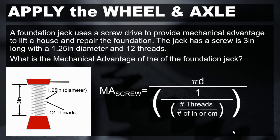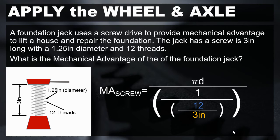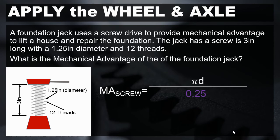To begin, we start with the 3 inch length of the screw, which goes into the denominator in the bottom fraction. We also know that there are 12 threads, which can be substituted in as well. 12 divided by 3 gives us 4, so we now have 1/4 or 0.25.